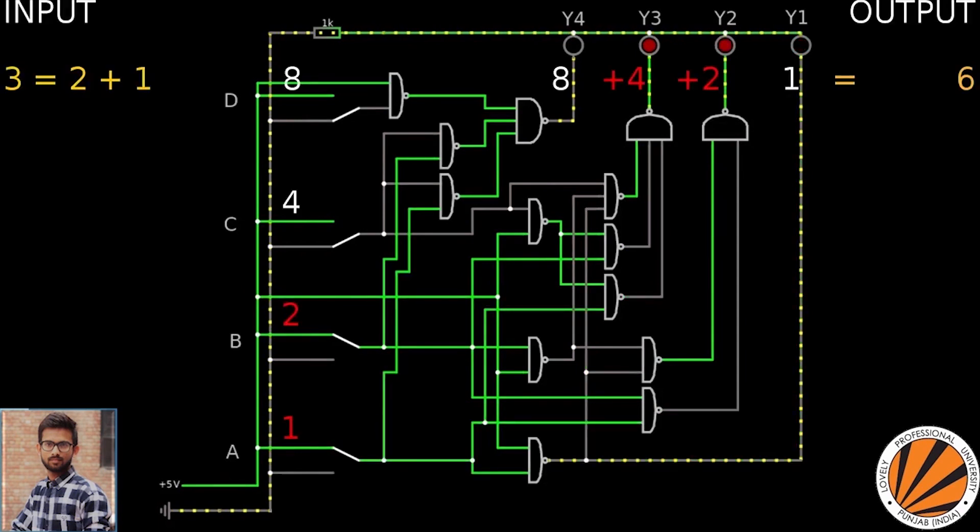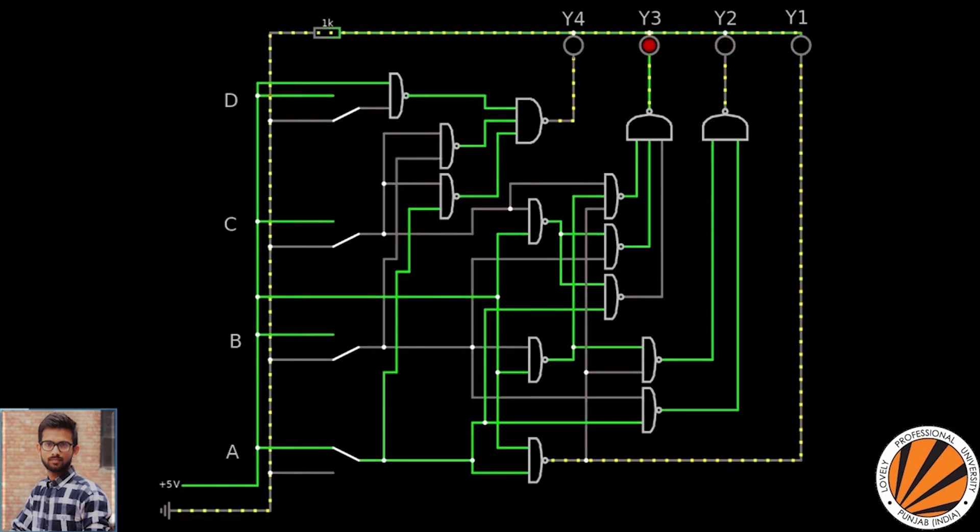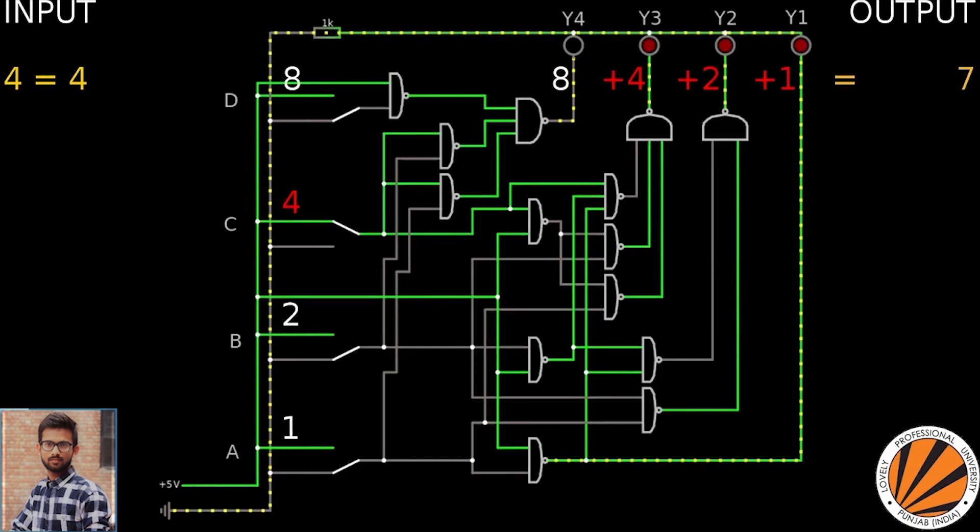Now input 3, and the output is 6, that is 3 plus 3 equals 6. Now input is 4, and 4 plus 3 equals 7. This is the BCD to Excess-3 Code Converter working correctly.